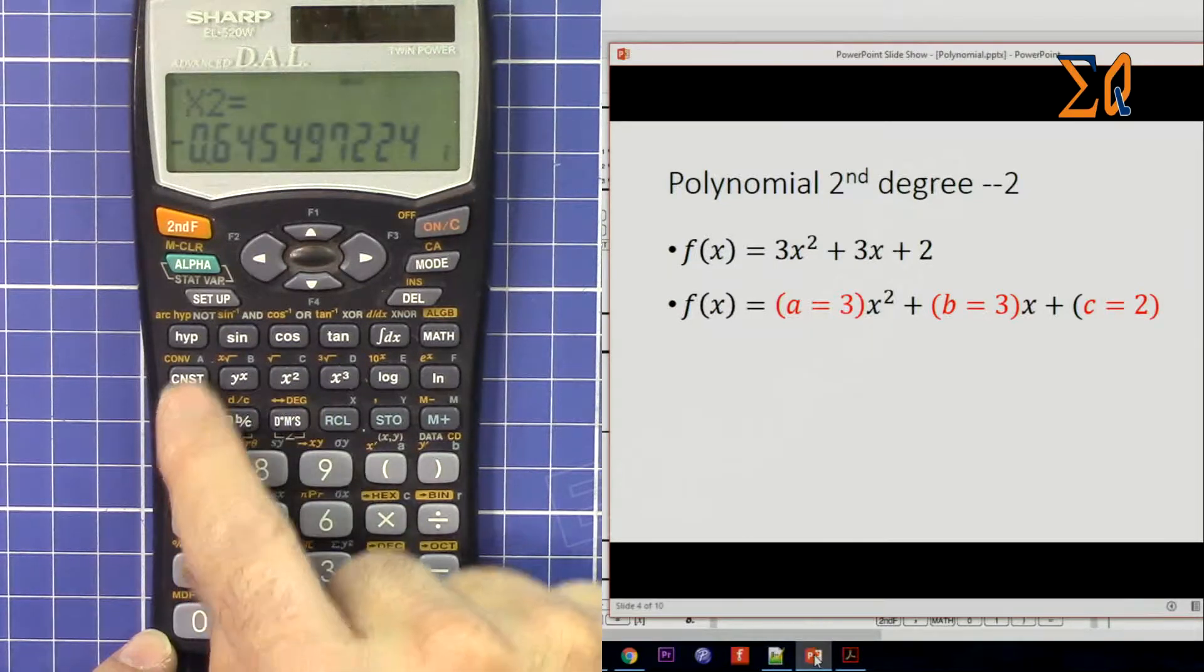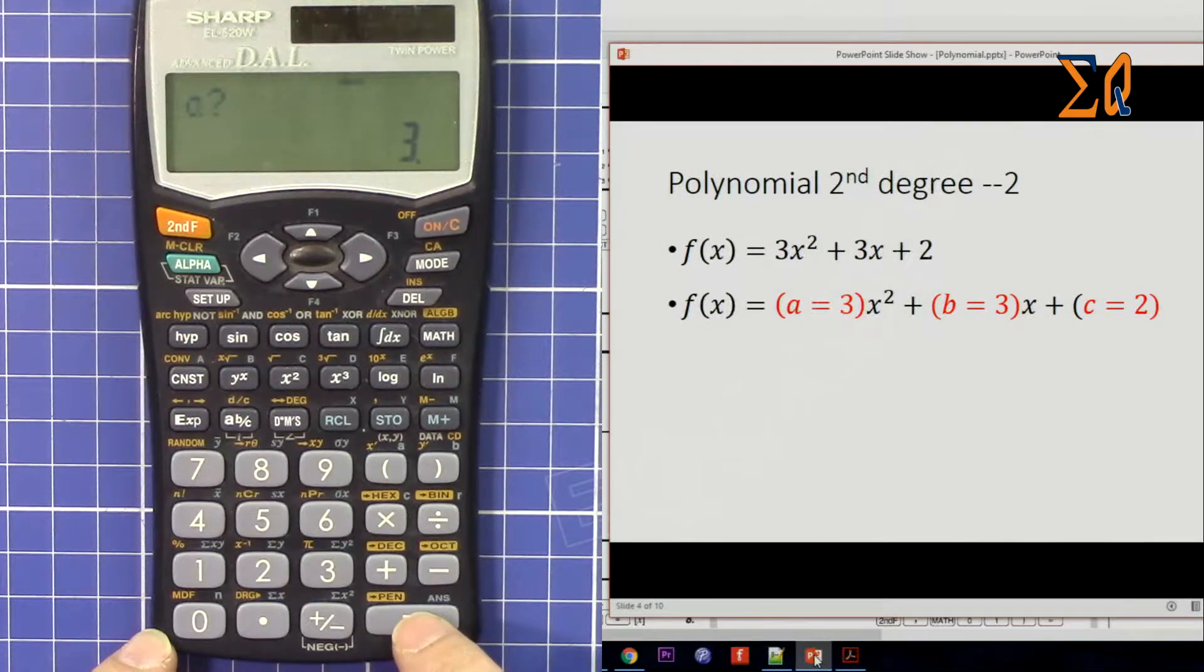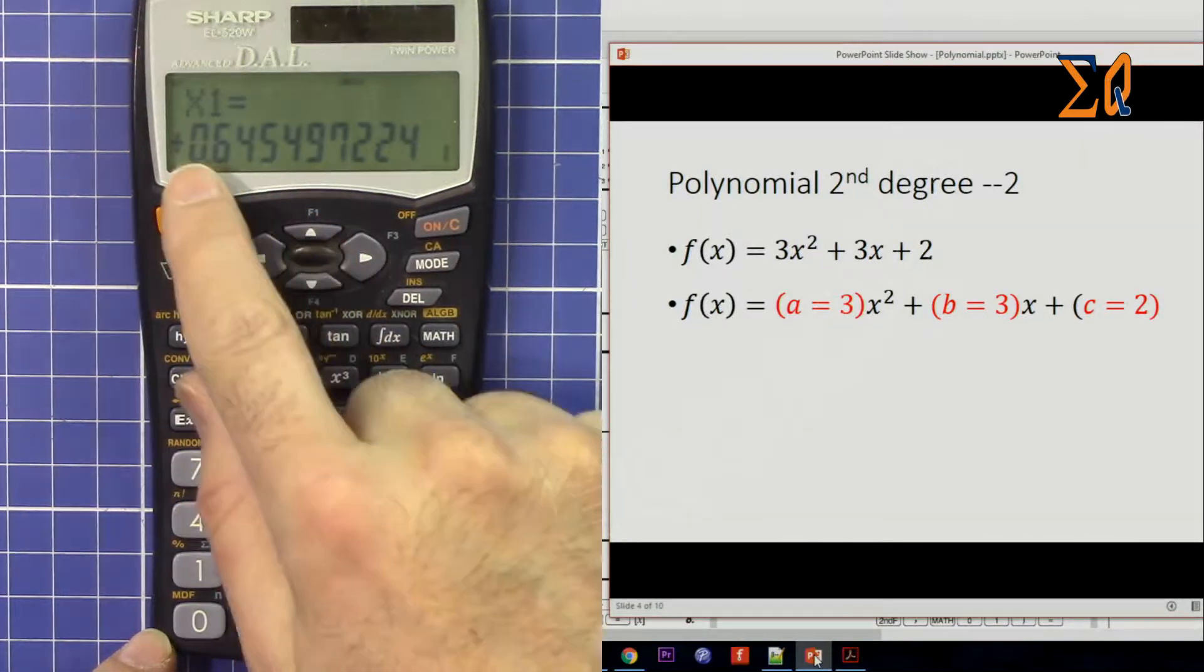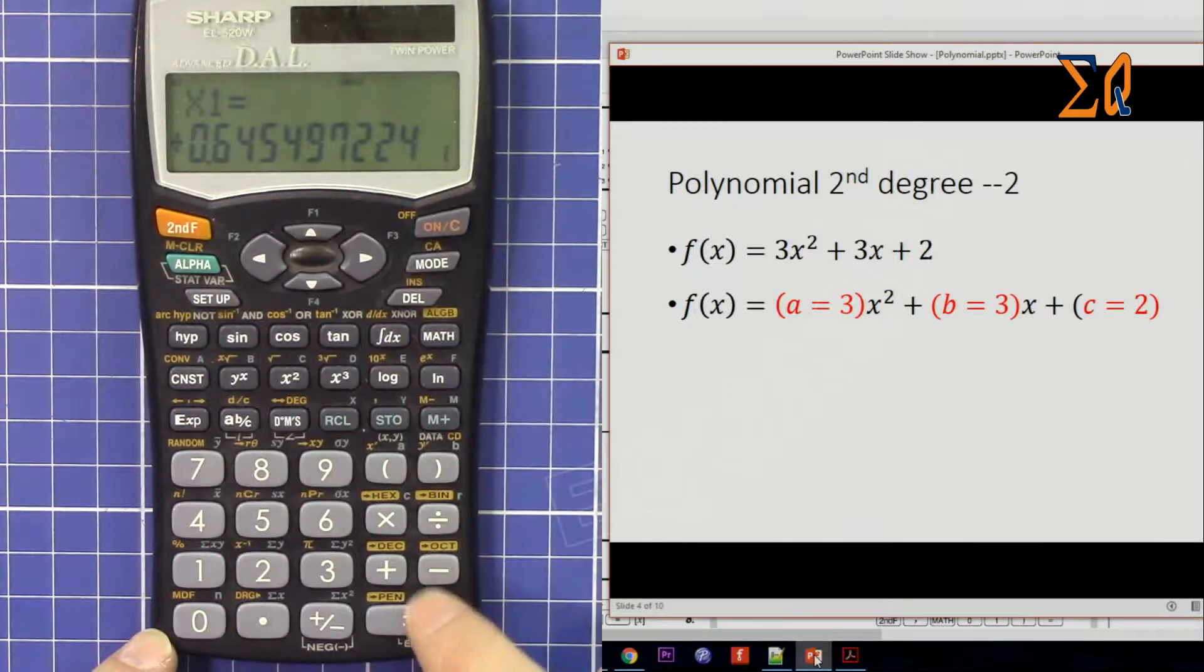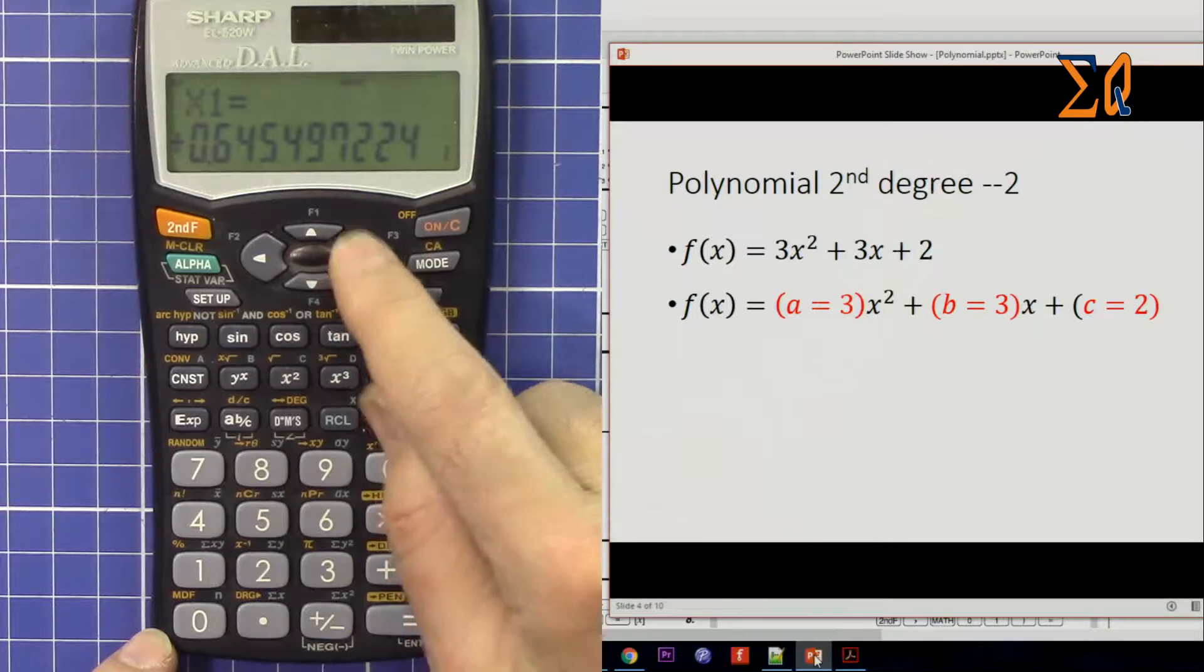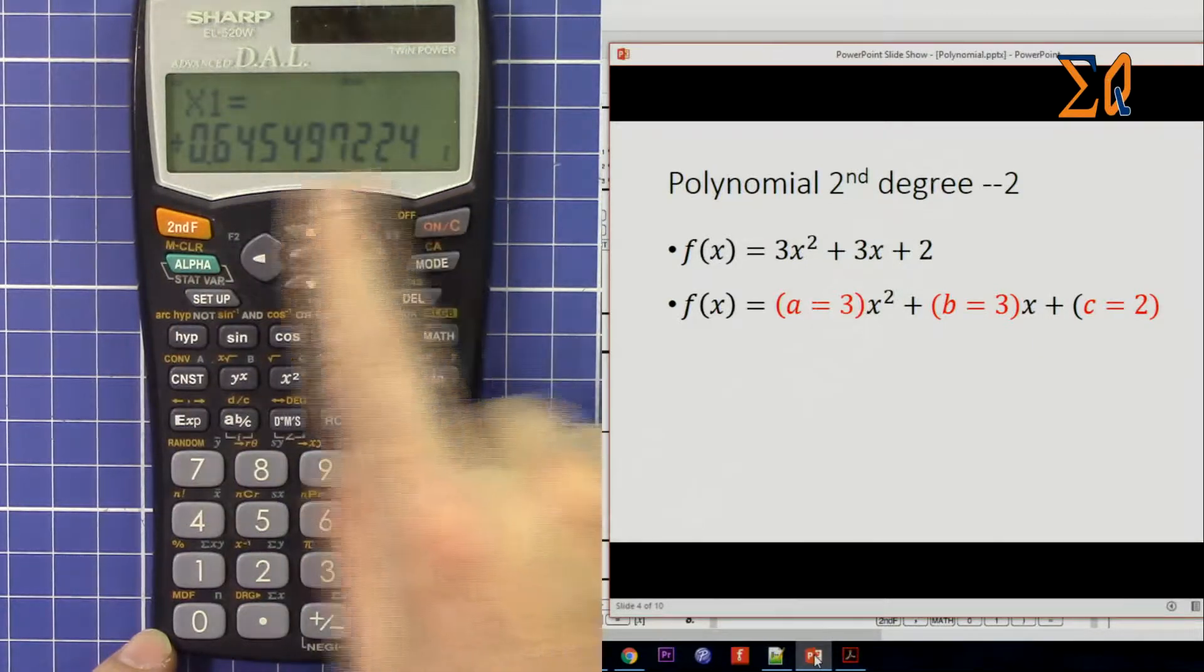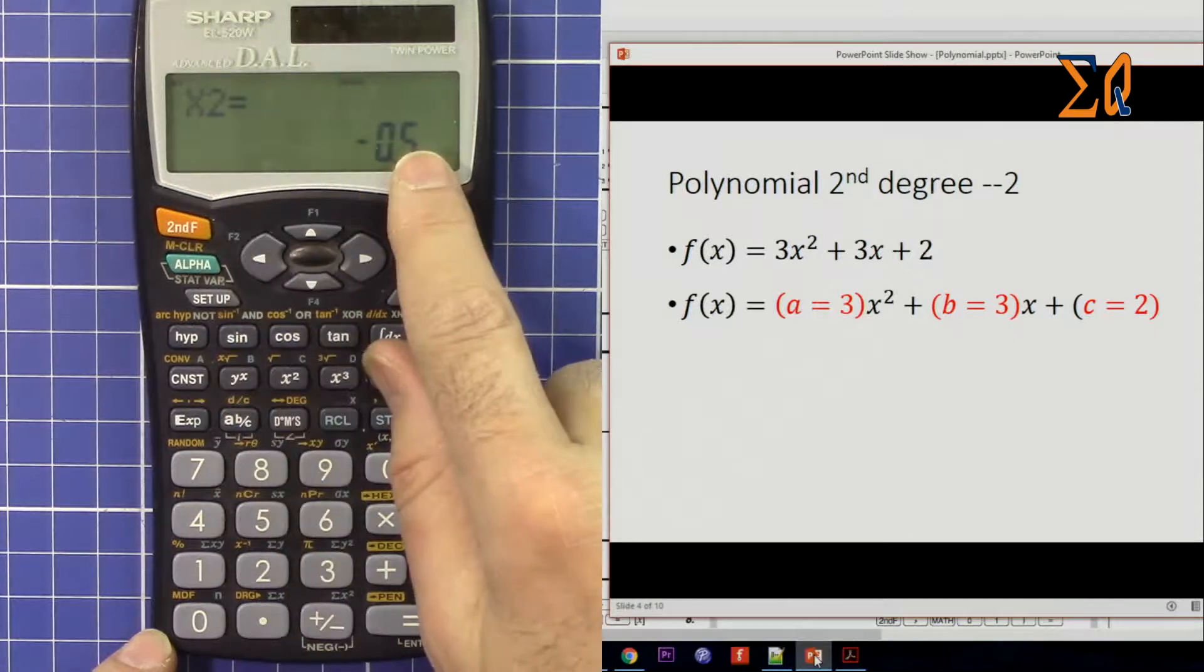To get the imaginary part, use second function and then this arrow. So it shows for x1 this value, second function here, plus 0.6i. And if you pay attention here, that was plus 0.6i, and then x2 is -0.5, that's -0.6i. So the i here shows that's imaginary.